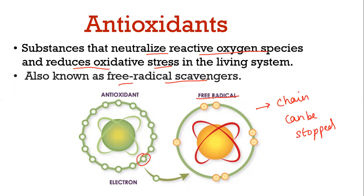Antioxidants are called scavengers because they prevent free radicals from continuing the chain reaction. Also, free radicals promote aging — with age, people will see that skin becomes saggy and they have wrinkles on their body. Antioxidants in the body can help fight aging defects. So we can say that antioxidants provide anti-aging benefits. They also repair damaged cells and improve the immune functions of any living body.